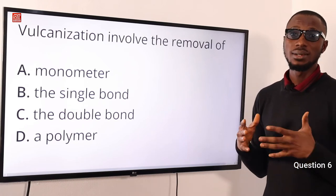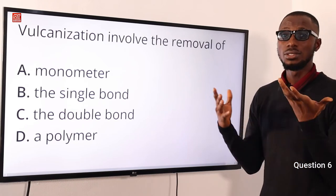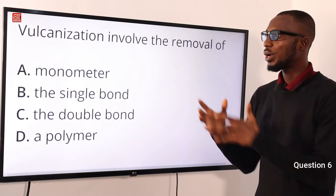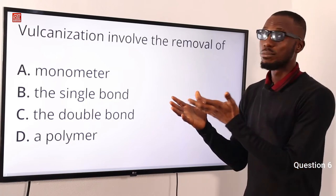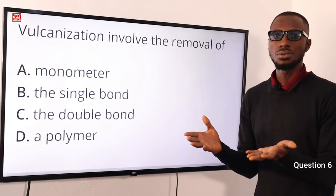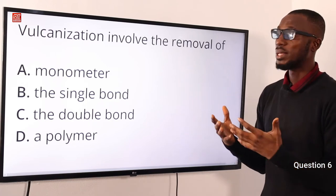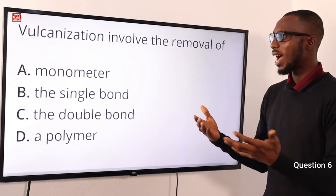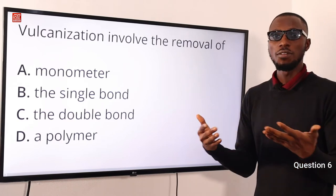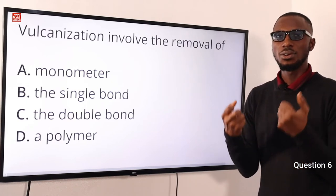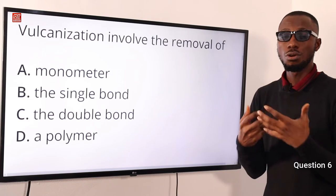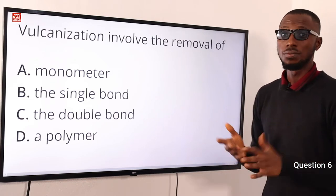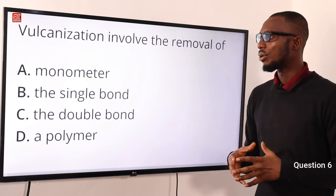Rubber has a double covalent bond. When you introduce a sulfur atom to it, it reacts with the double bond there and forms a kind of cross link. This cross link is very strong and supports the long chain of rubber.